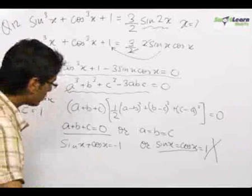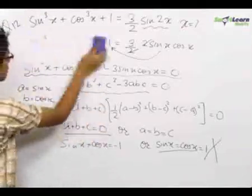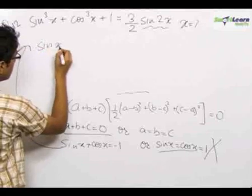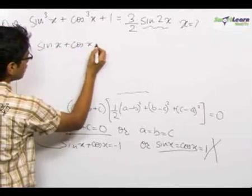So, on using the given equation, sinx + cosx = -1. On using this equation, sinx + cosx = -1.